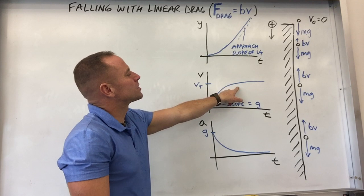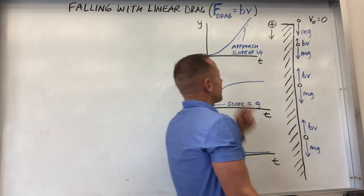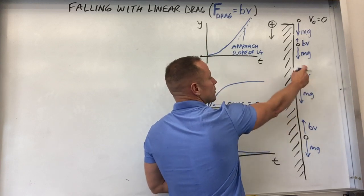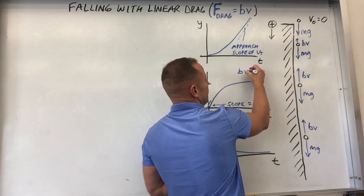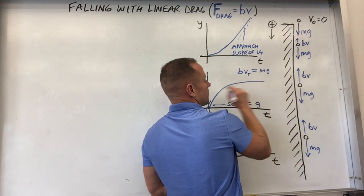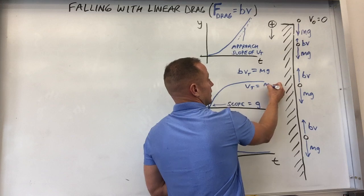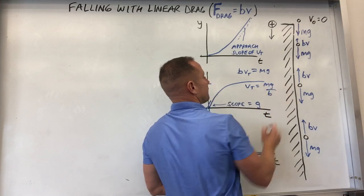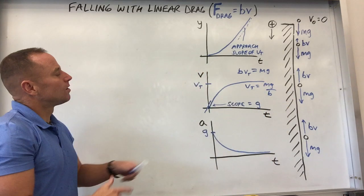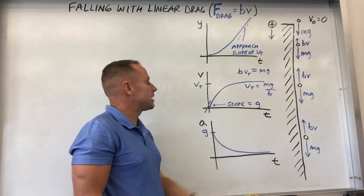Pretty easy to figure out what the terminal velocity is. When these balance, then you're going to get the terminal velocity. So that balance is going to happen when there's no net force or when bv equals bv terminal equals mg. And so then what we can do is say that the V terminal is mg over b. So that's kind of the limiting behavior, beginning behavior, ending behavior.